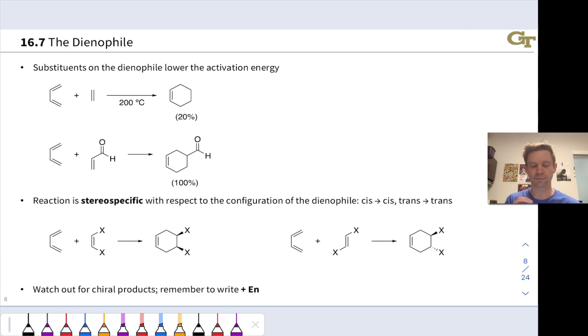The parent Diels-Alder reaction, the simplest Diels-Alder reaction we can imagine between 1,3-butadiene and ethylene actually doesn't work very well. It takes very high temperatures, 200 degrees C, and we only get about 20% yield out of this reaction.